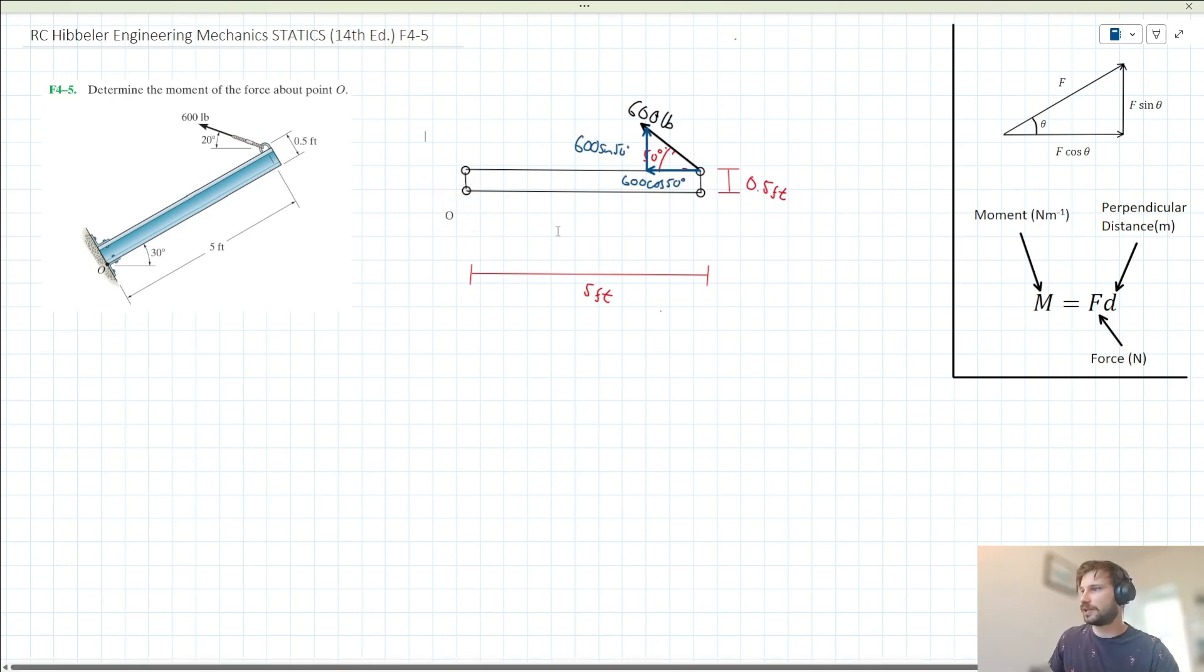We'll have a 600cos50 horizontal component here and a 600sin50 vertical component here. This force is acting 5 feet away from point O here, and we note that the horizontal component, the 600cos50 component, is going to enact an anticlockwise moment about point O, and the 600sin50 vertical component is also going to enact an anticlockwise moment. We know that this moment is going to end up being anticlockwise. Let's go ahead and solve for it then.